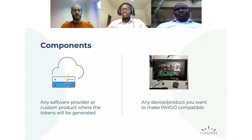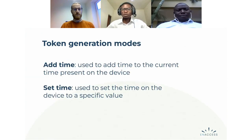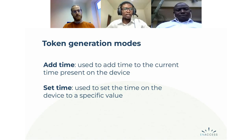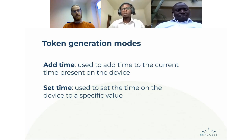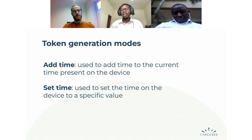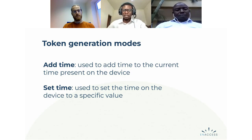While generating the token, there are two different modes that can be used: set time and add time. Add time is used when you want to add time to the current value on the device. For example, if you have three days and you add two days, at the end you will have five days left. Set time is used when you want to set the time to a specific value — if you set it to one day, you will only have one day left.